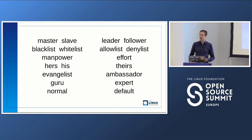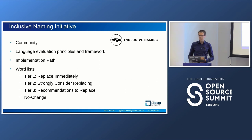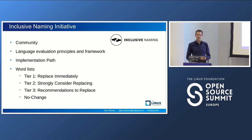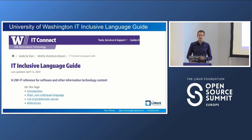Looking for expert information, I found the Inclusive Naming Initiative under the Linux Foundation, which is a great community that also has a Slack channel you can join. They're very welcoming and have an open process to evaluate words that might be considered non-inclusive — determining if this is the case, why, recommending alternatives, and prioritizing them with a tiered list.